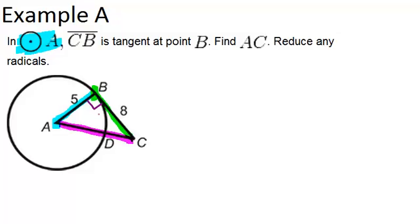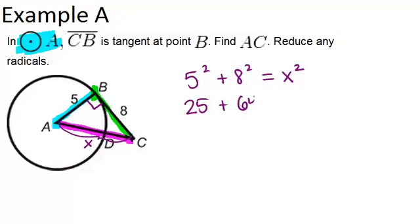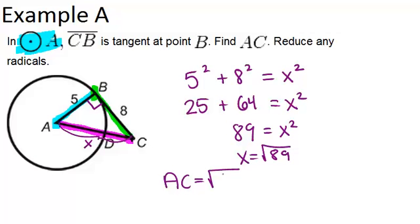Once you know that's a right angle, you can use the Pythagorean theorem on the right triangle to solve for side AC, which is the hypotenuse. So if we call that side X, we know that 5 squared plus 8 squared has to equal X squared, and therefore 25 plus 64 equals X squared. So 89 equals X squared, which means that X equals the square root of 89. So that means that the length of AC equals the square root of 89.